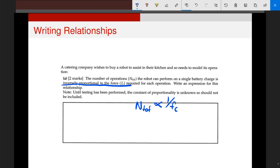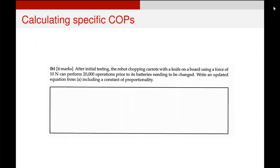Now usually we would go and put in a constant of proportionality, but we've got this second note here which says until testing is performed, the constant of proportionality is unknown, so it should not be included. All that means is that we can leave our answer like this. So let's jump on to the next question and see where that goes.